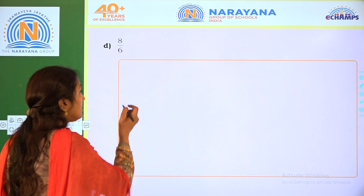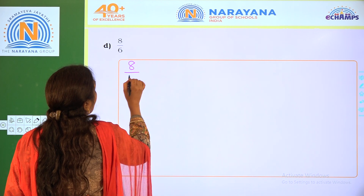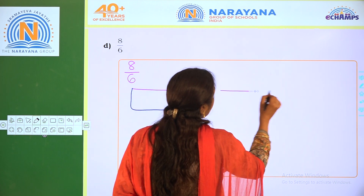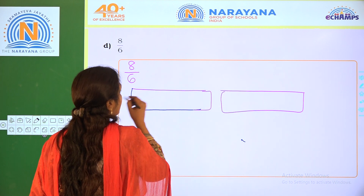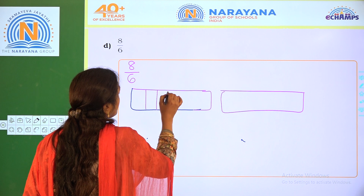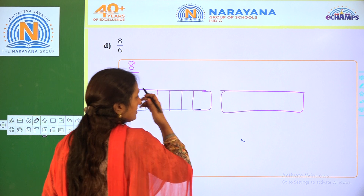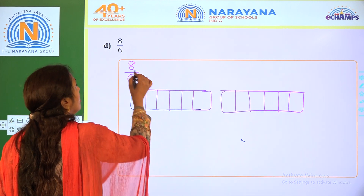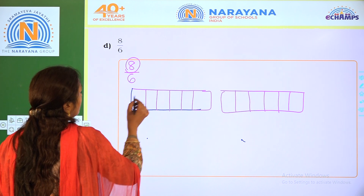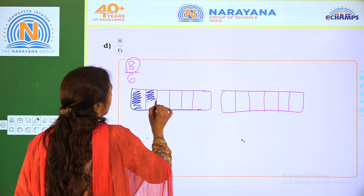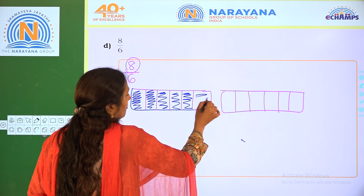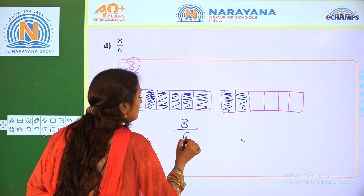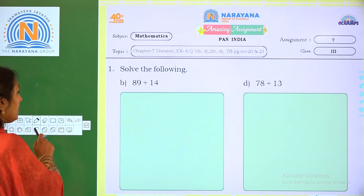Next one: 8/6. To represent 8/6, I am taking 2 equal rectangles. I divided each rectangle into 6 equal parts: 1, 2, 3, 4, 5, 6. How many parts do we have to shade? 8. So shade all 6 parts of the first rectangle, and 2 parts from the second. Total shaded parts are 8, and the number of equal parts is 6, so this represents 8/6.